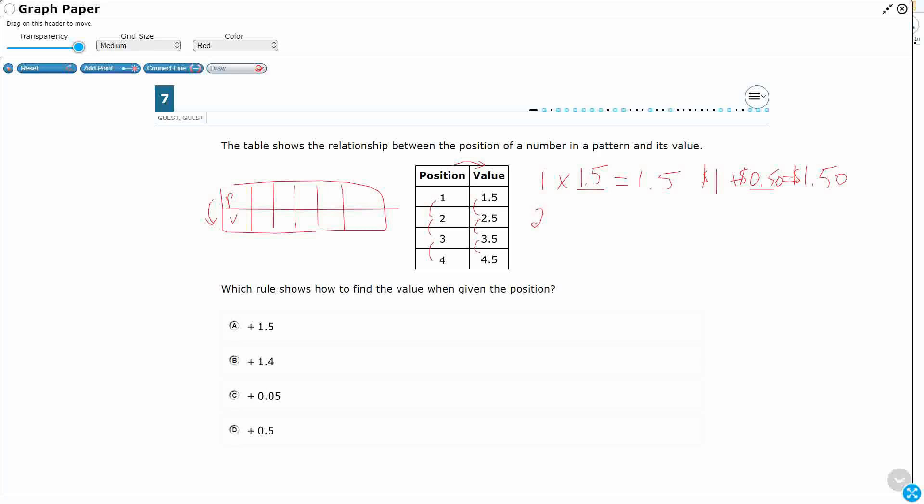Let's try this for this next one. 2 times 1.5 or 2 plus 0.5. Let's see which one of those gets you to your 2.5.